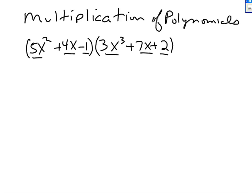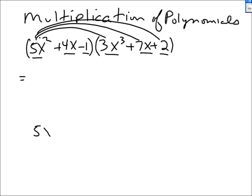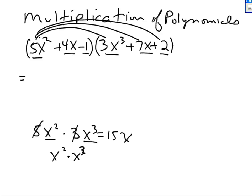Let's take the first term and multiply it by each term in the second bracket. What is 5x squared times the first term, 3x cubed? Well, 5 times 3 is 15, and x squared times x cubed — when multiplying with the same bases, you add the exponents. So we get 15x to the 5th.